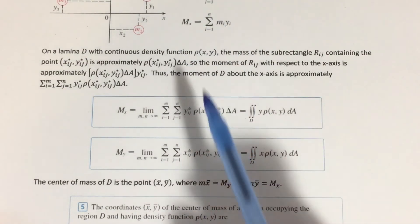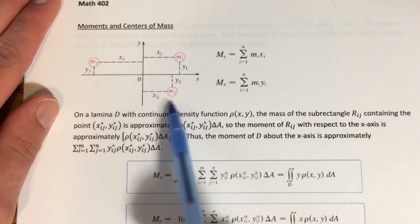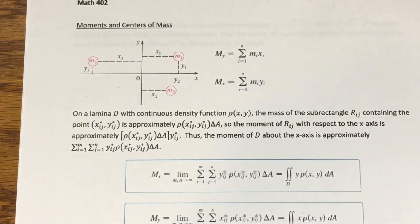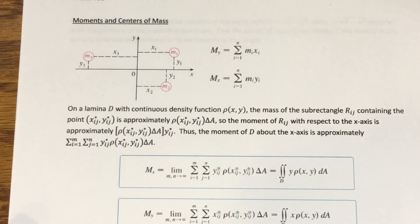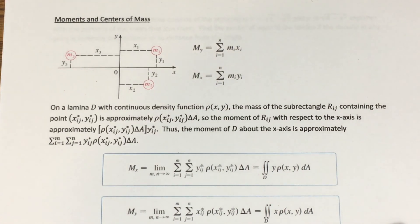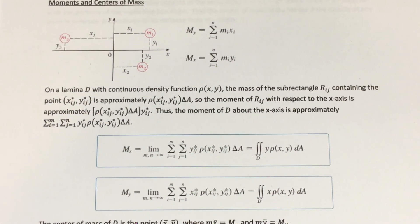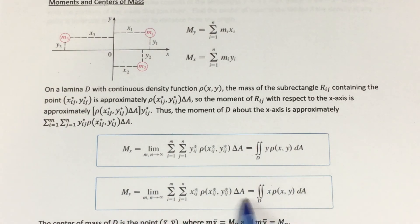The moment of the entire system about an axis is the sum of the individual moments — it's a measure of the tendency of the system to rotate about that axis. In calculus 2, instead of a finite number of point masses, we consider a region in the xy-plane where each point has a density assigned to it. There the assumption was uniform density, but now we allow density to vary from point to point. I'll talk about moments for an entire lamina and center of mass in the next video.